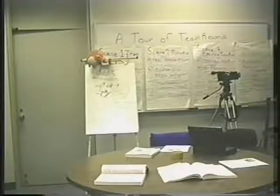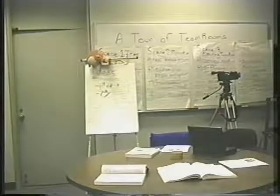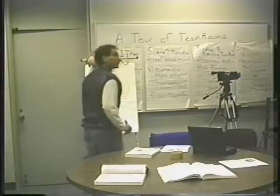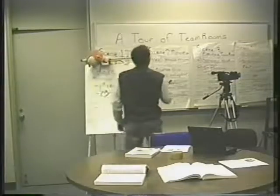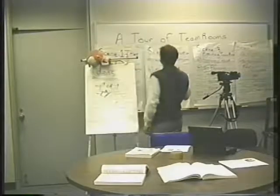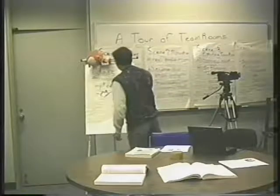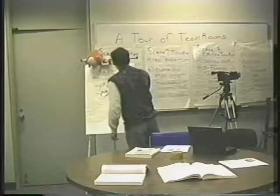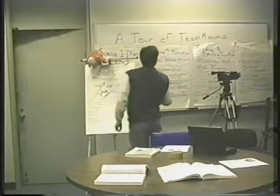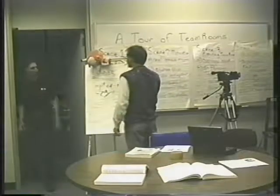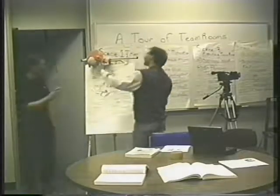When group members are located close together, they often use a team room as a focus and a place to leave their shared work. People can come into the team room and do some individual work. When other collaborators come into the room, they can begin to work together.